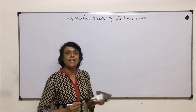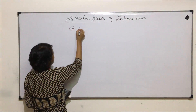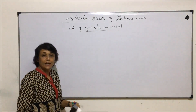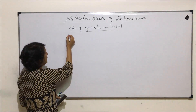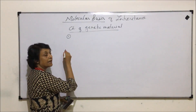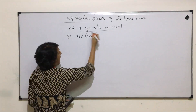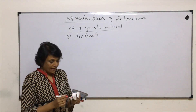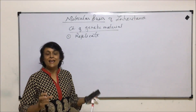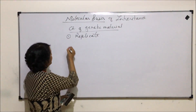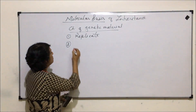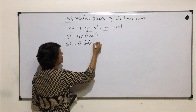Let us first start with which molecule can be termed as genetic material — the characteristics of genetic material. Which properties should it exhibit? The first property is that it should be able to replicate. The genetic material is the one which gets inherited from parents to offspring, so when cells divide, this genetic material should be able to replicate.